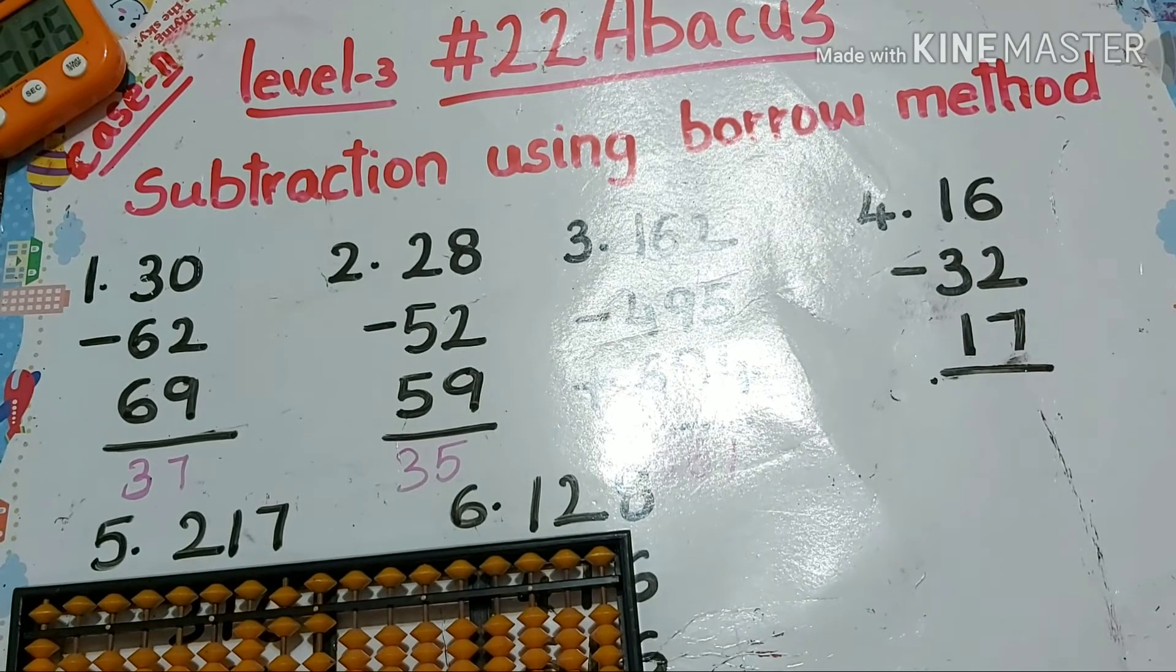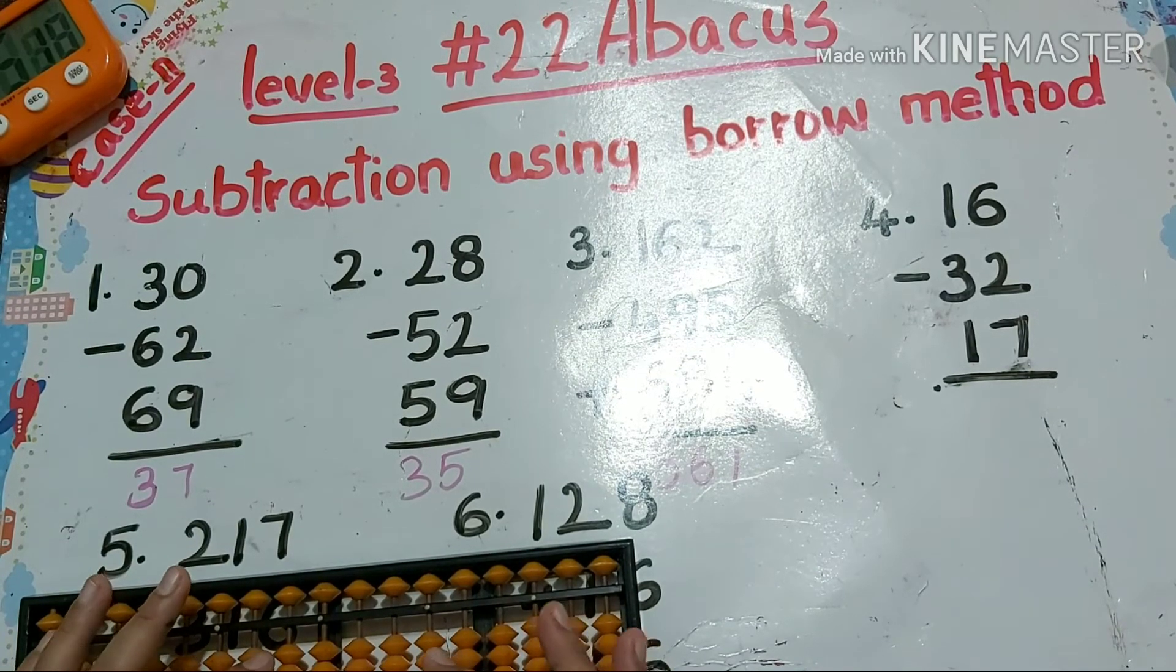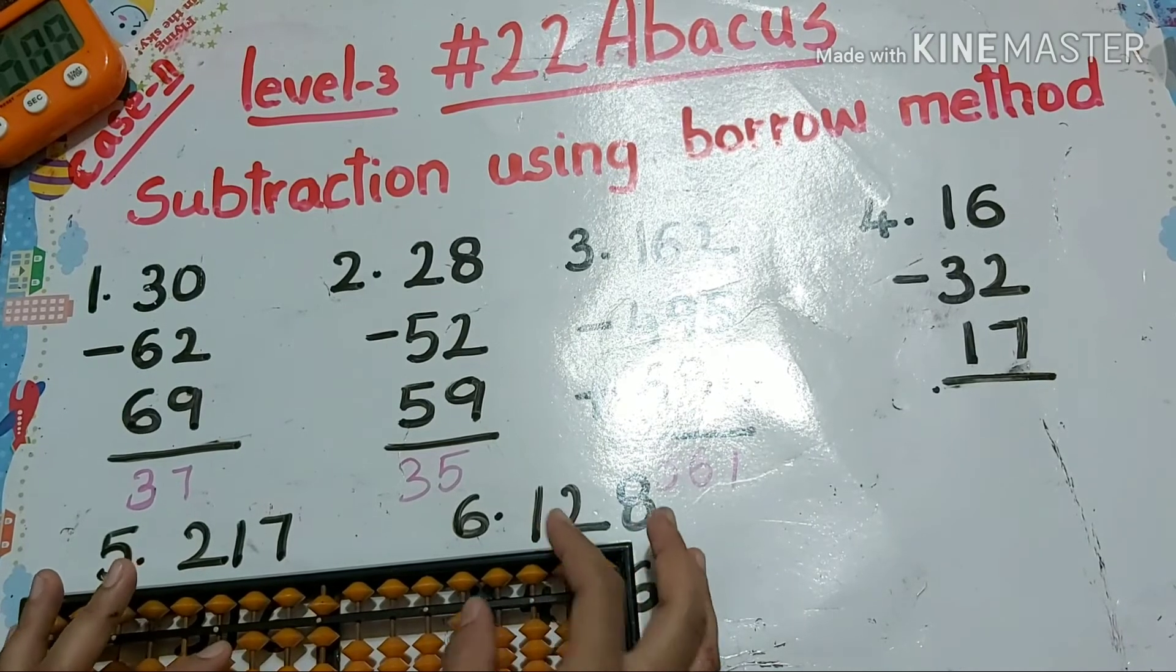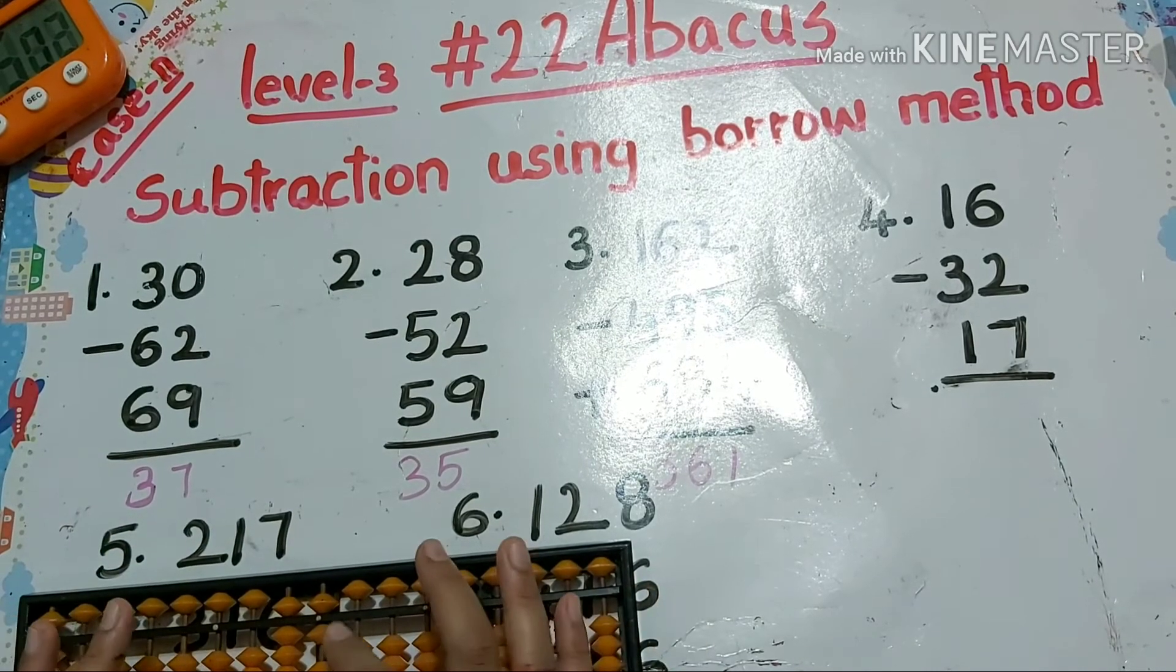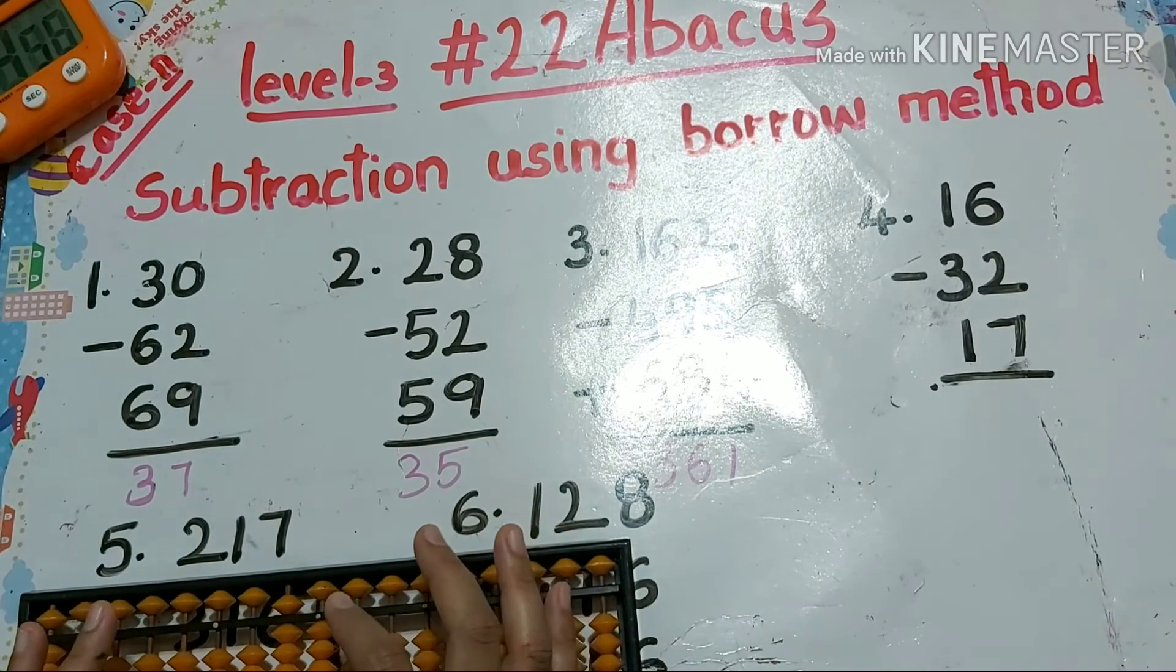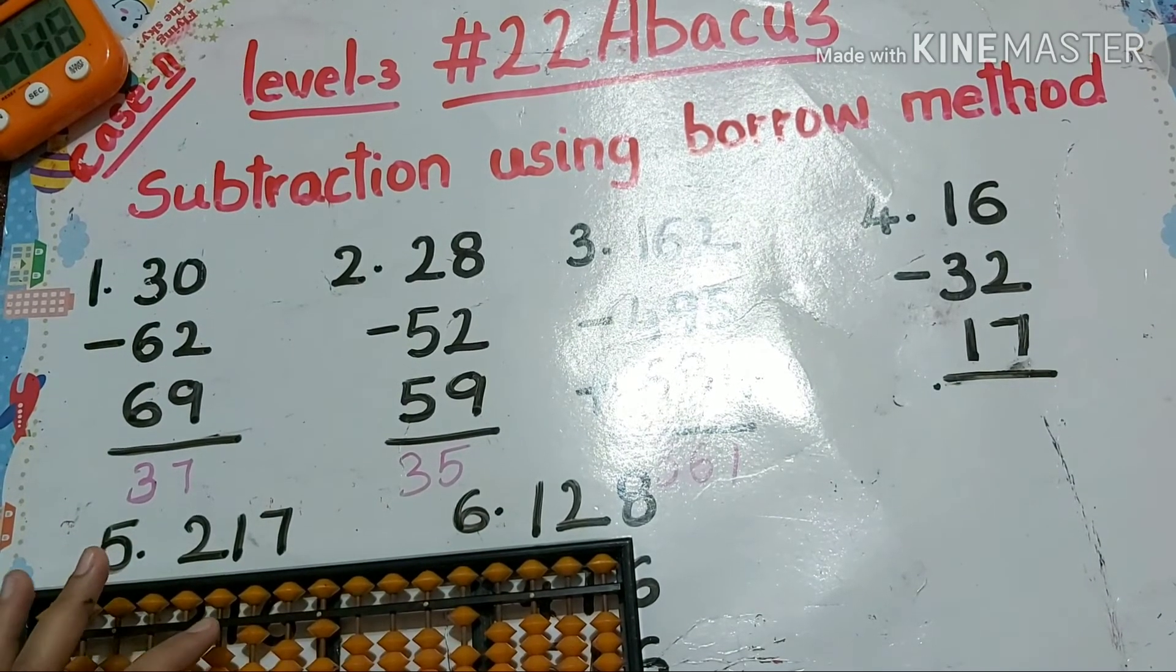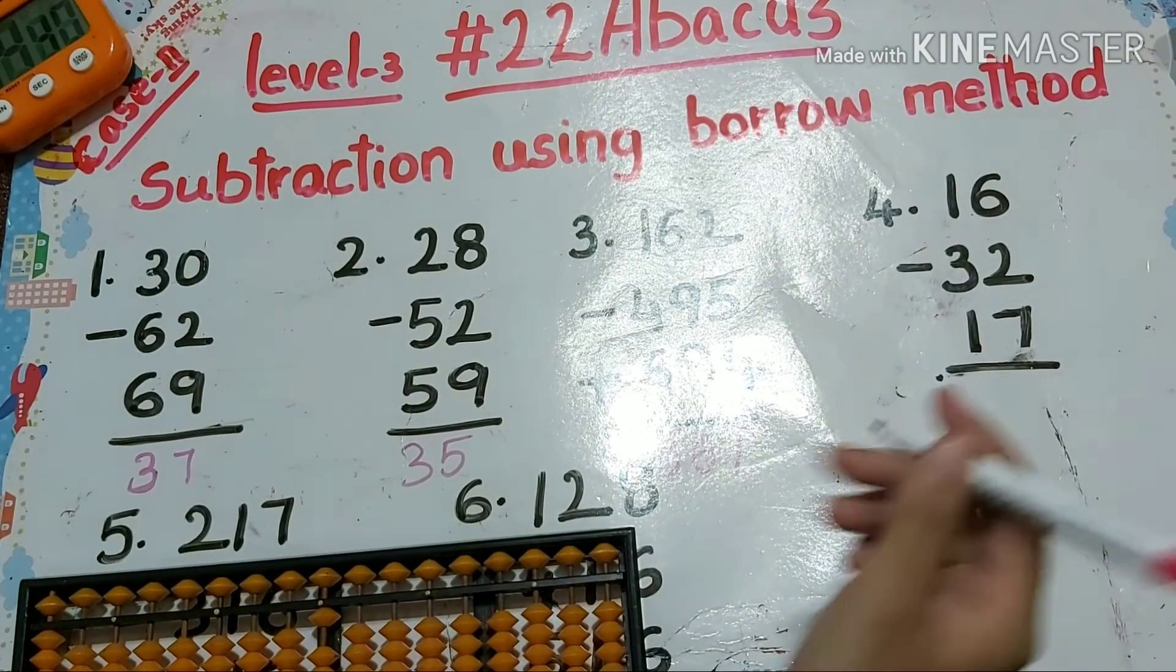Next one: 16 minus 32. So how to do minus three? We have to take borrow from hundredth place: minus ten plus seven. Next minus two: minus five plus three. Next plus one directly we can do, plus seven. So minus three plus ten here you must do. How to do plus ten? Minus four hundred. So the answer is one.